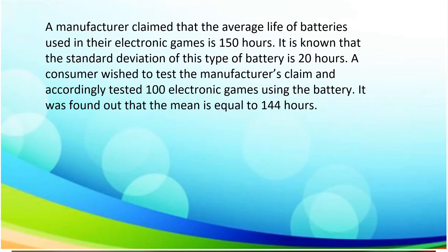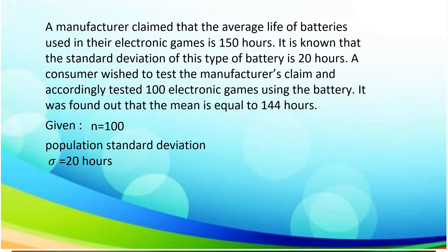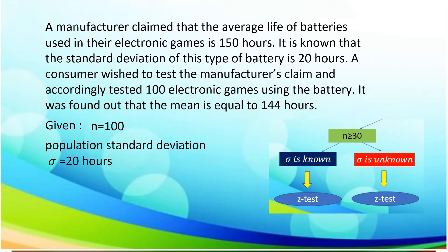Now let us apply the different kinds of situations. What type of test are we going to use with the given parameters? The manufacturer claimed that the average life of batteries used in electronic games is 150 hours. It is known that the standard deviation of this type of battery is 20 hours. A consumer tested 100 electronic games using the battery and found out that the mean is equal to 144 hours. The given number of samples is 100 and the population standard deviation is 20 hours. Since the population standard deviation is known and the number of samples is greater than or equal to 30, the test that we are going to use is z-test.